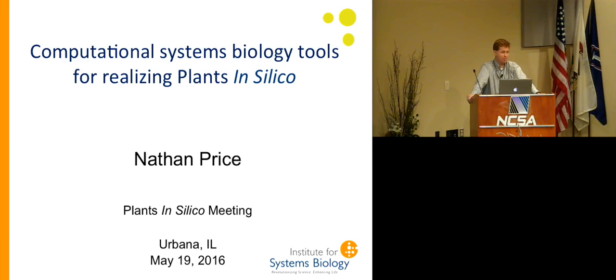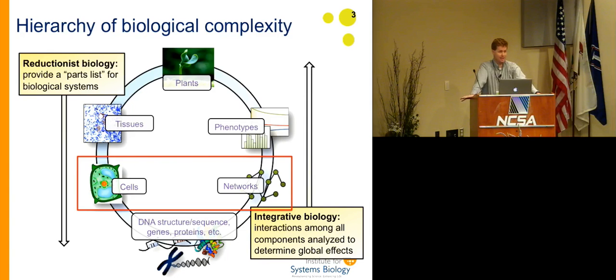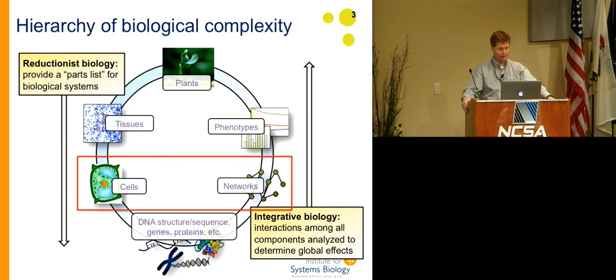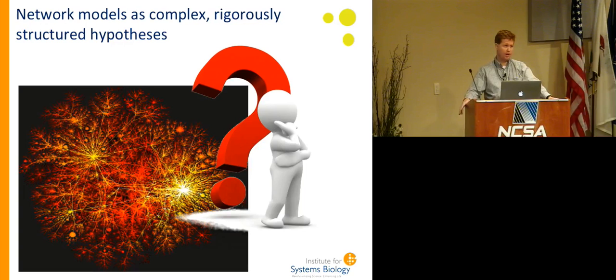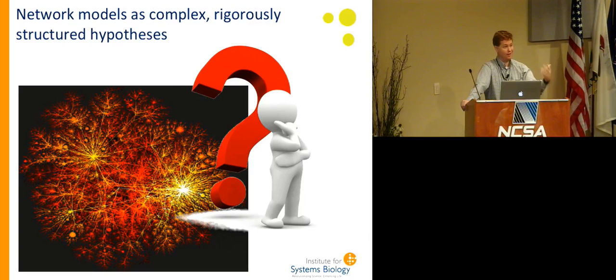So of course there's lots of complexity as we think about reconstructing plants all the way from the DNA structure, which in plants can be extremely complicated with lots of multi-ploidy beyond probably what we see in any of the other domains of life. And so there's a ton of complexity here to work out in terms of wanting to do plants in silico. Network models are one really powerful way to have structured hypotheses — basically the notion that we can't say in one sentence our hypothesis for how a cell functions, but we can write a lot of those hypotheses down as network models.